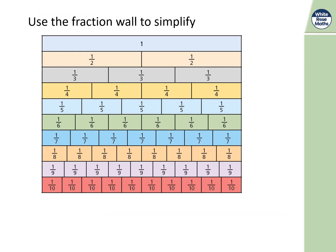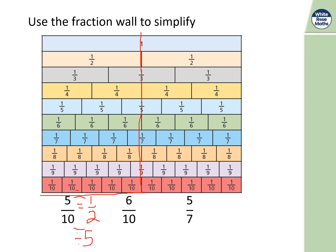Using the fraction grid: five tenths — from here to here — drawing a line down shows that's equal to a half. If we divide top and bottom by five we get one half. This is all to do with finding the highest common factor — the highest number that goes into both numbers simultaneously with no remainders. Five is the highest common factor between five and ten.